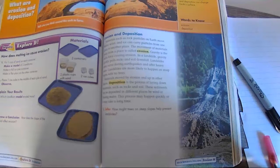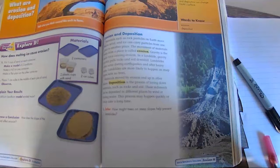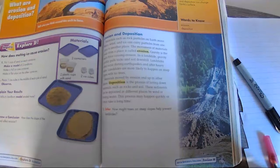Gravity is the main force causing erosion. In a landslide, gravity quickly pulls rocks and soil downhill. Landslides often occur during earthquakes and after heavy rains. Landslides are more likely to happen on steep slopes with no trees.